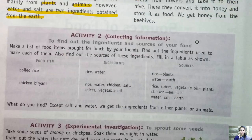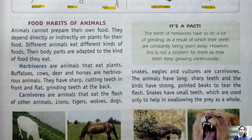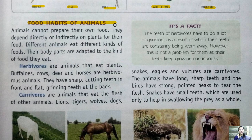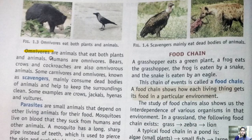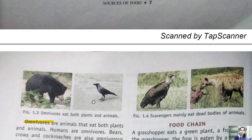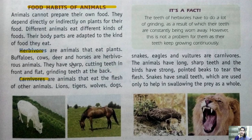The sources of food are two: plants and animals. Now coming to the food habits of animals — plants prepare their own food and are called producers, whereas animals cannot prepare their own food. They depend on plants or other animals for food, and hence they are called consumers. Depending on their food habit, animals are divided into herbivores, carnivores, omnivores, scavengers, and parasites.